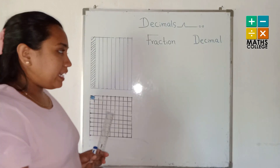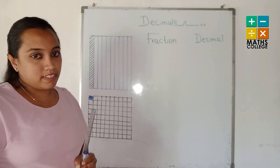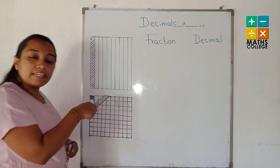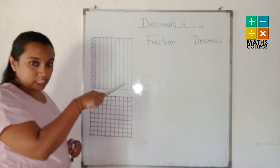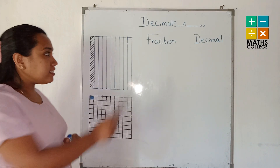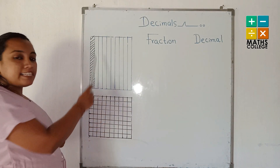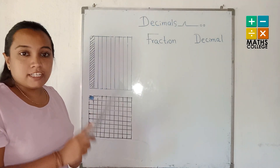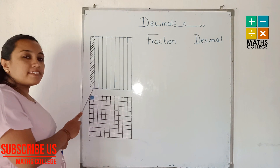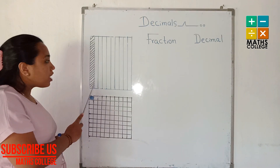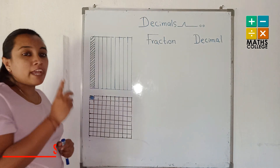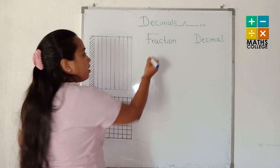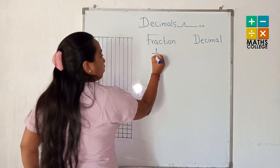When I explain what decimals are, think about the rectangle. The square shape is divided — this is one unit. Considering this is the one unit, it is divided into ten equal parts. Ten equal parts, and one is the column. How can we write the shaded part as a fraction? It can be written as one upon ten.